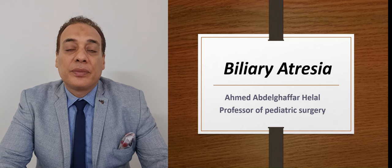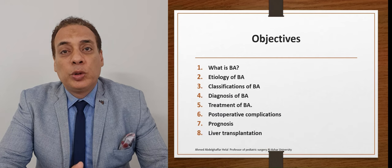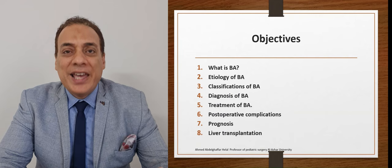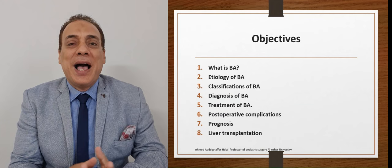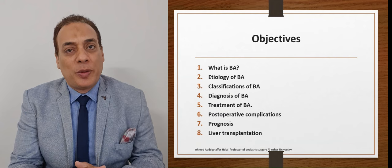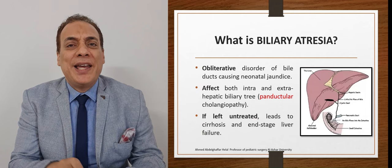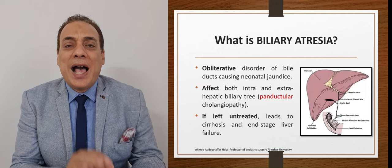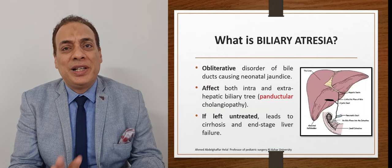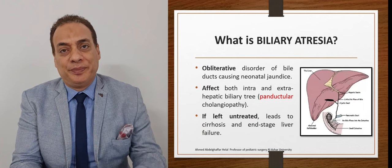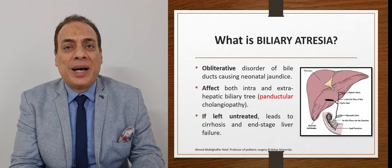By the end of this presentation, you should be able to know what is biliary atresia, its etiology, classification, how to diagnose it, how to manage it, and also the prognosis and post-operative complications. Biliary atresia is an obliterative disorder of the biliary tract affecting both intra- and extra-hepatic bile duct system. If not treated, it will ultimately lead to liver failure and cirrhosis.